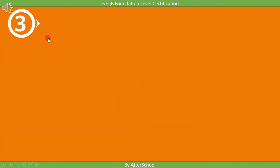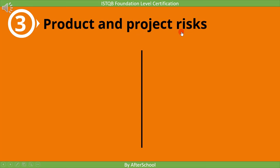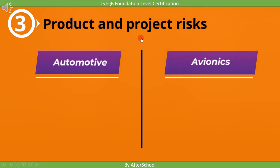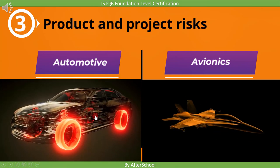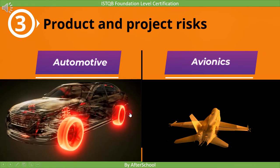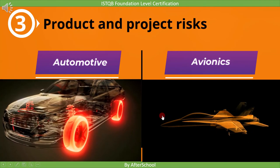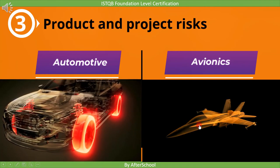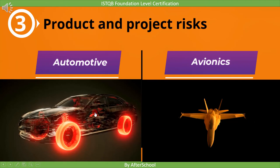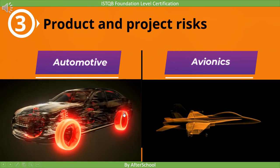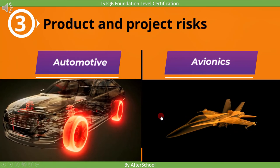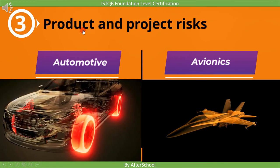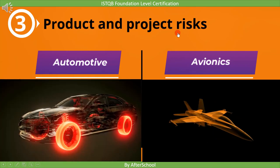The third context is product and project risk. Let's take an example of two different products: automotive and avionic. Avionics products contain more risk than automotive. Therefore, the test process will be more rigorous for products with more risk. The third context is product and project risk.